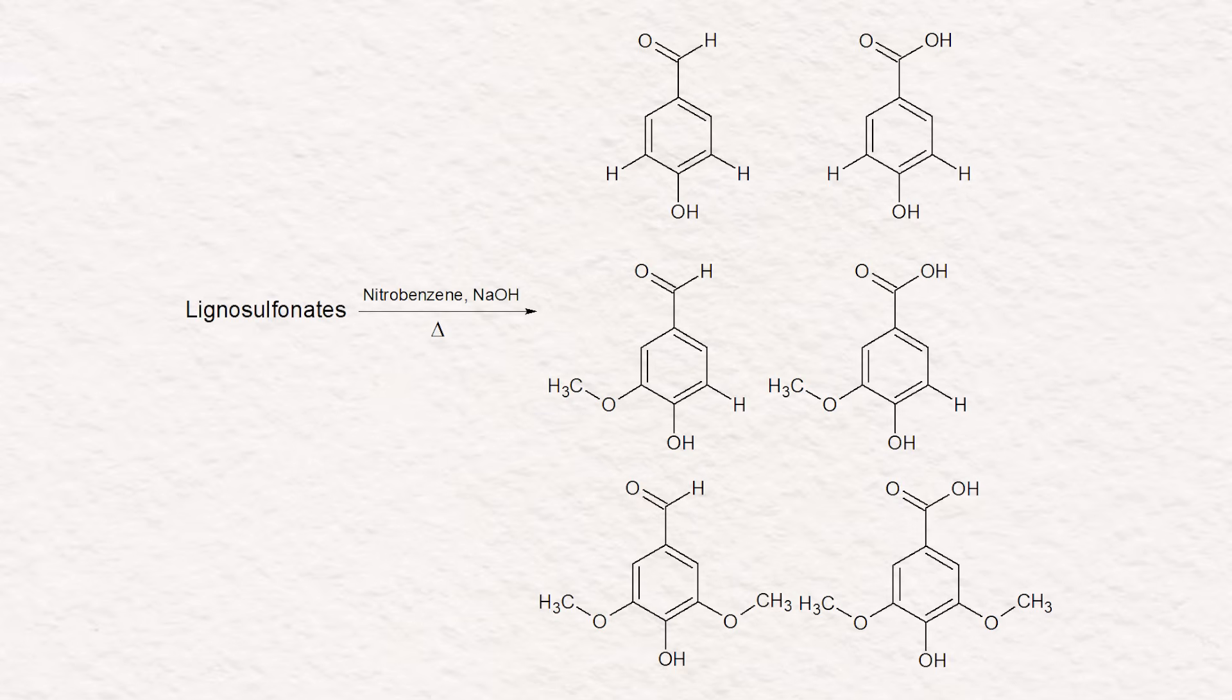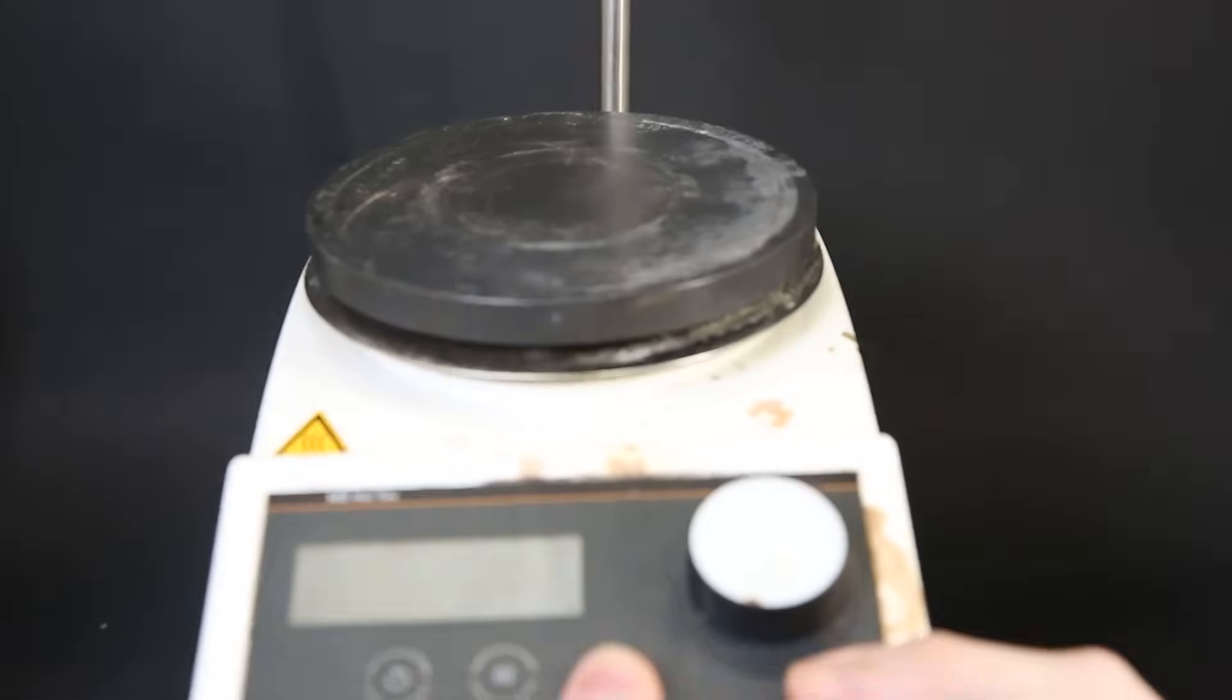To break down the lignosulfonates, I will use a process called nitrobenzene oxidation. In this process I can use nitrobenzene and sodium hydroxide, paired with heat to break apart the lignin into its many different components. So to get started, I first set up a large flask with heating.